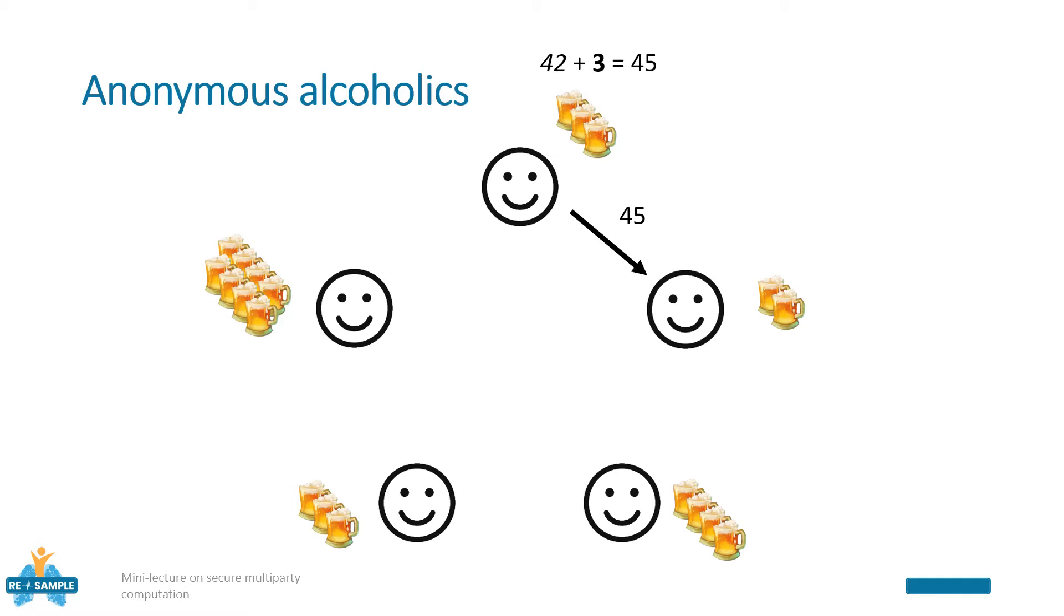Note that the second guy cannot guess the number of beers drunk by the first one, since that 45 could be the sum of 42 and 3, but also of 40 and 5, and also of 41 and 4, and so on.